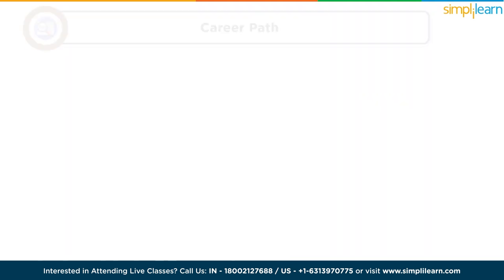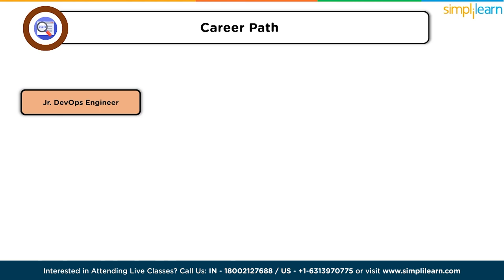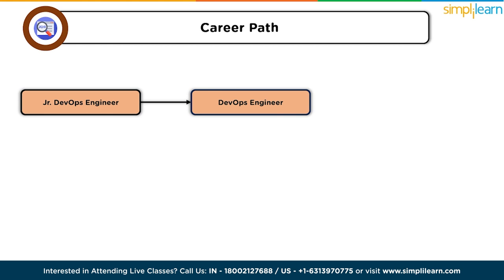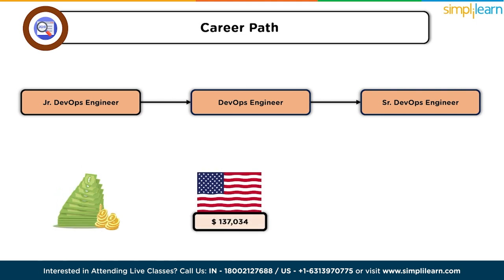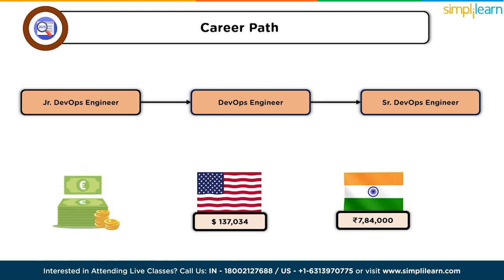The career path of a cloud DevOps engineer begins at the entry-level or junior-level DevOps engineer stage, where you focus on learning the fundamentals of DevOps practices, cloud computing, and automation, assisting with building and maintaining CI/CD pipelines, scripting, and basic infrastructure tasks. Next is a DevOps engineer — as you gain experience, you'll design, build, and maintain CI/CD pipelines, automate deployment processes, and manage cloud infrastructure. Senior DevOps engineers lead more complex projects, collaborate closely with development and operations teams, and are responsible for optimizing the entire software delivery pipeline, often guiding and mentoring junior team members. According to Glassdoor, the average salary of a cloud DevOps engineer is $137,000 per annum in the United States, and in India it goes around 7,84,000 rupees per annum with additional cash benefits.